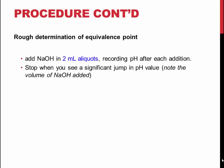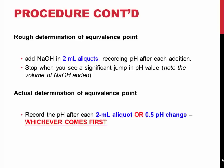Add sodium hydroxide in 2 mL aliquots and record the pH to two decimal places. The pH should be recorded after each addition or after a 0.5 change in pH, whichever comes first. This should give you enough data to plot your titration curve from which you can obtain the concentration of acetic acid in the vinegar you analyzed.